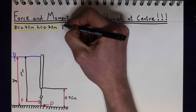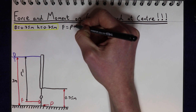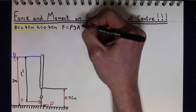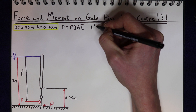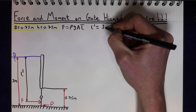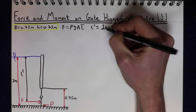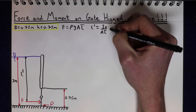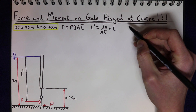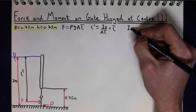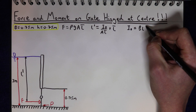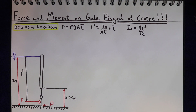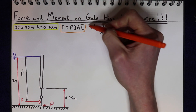The total force on the gate F is going to be the density of water times gravity times the area of the gate times the centroid of the gate. The point where that force acts, L dash, is the second moment of area of the gate over the area of the gate times the centroid, added to the centroid. The second moment of area for our rectangular gate is width times height cubed over 12. Those are the three equations we need to solve this problem.